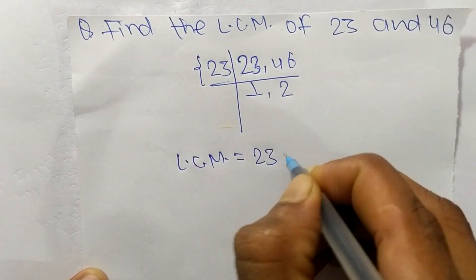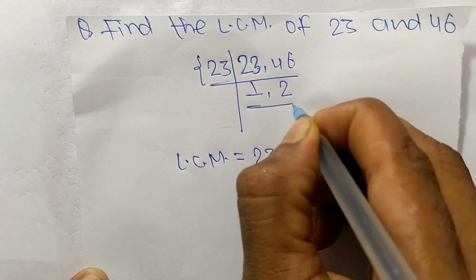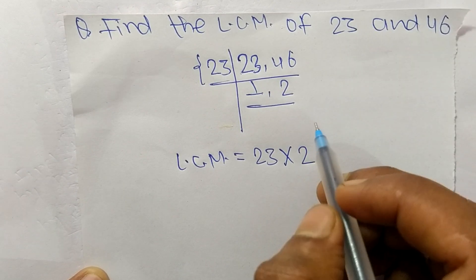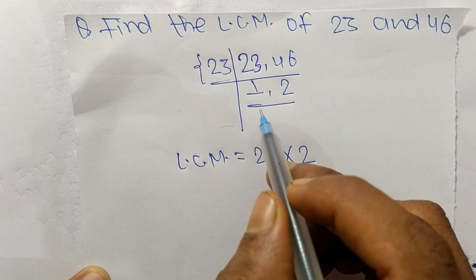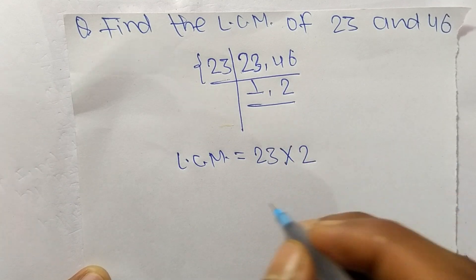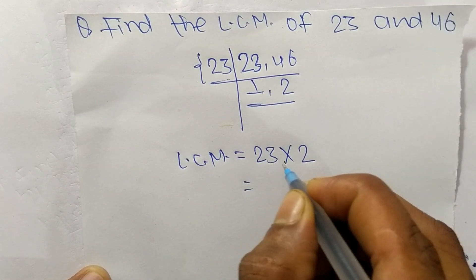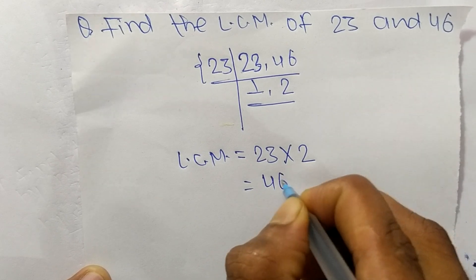part it is 23, and from this part we can take 2. We don't take 1 here because by multiplying any number with 1 we get the same result. So it is 23 times 2, which means it is 46.